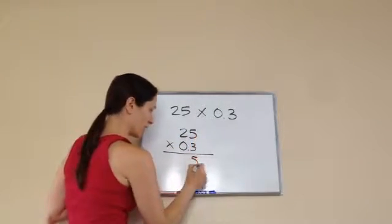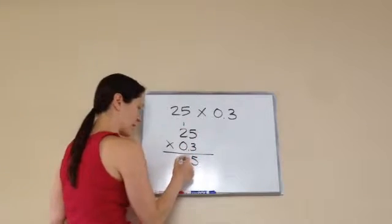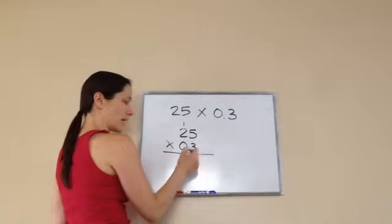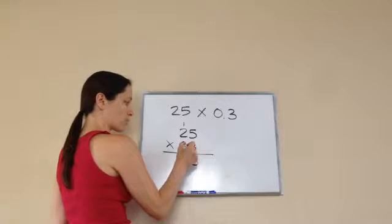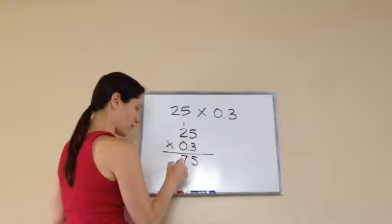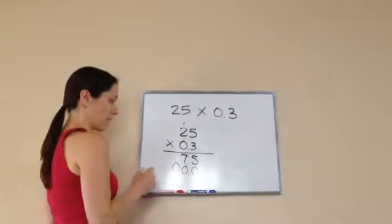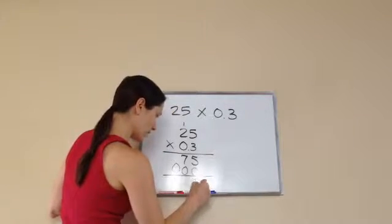So now 5 times 3 is 15. Carry the 1. 3 times 2 is 6 plus 1 more is 7. Good. But we're not done yet. We finished this number. Now let's work with this one. 0 times 5 is 0. And 0 times 2 is 0. Now, a lot of times we fill in this space because you like to. Remember that?